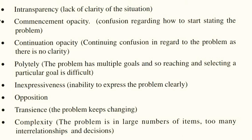Opposition: the problem itself creates an opposition-type situation, making it a characteristic of a difficult problem. Transience: the problem keeps changing and lasts for only a short time, creating trouble for the problem solver. Complexity: the problem involves a large number of items, too many interrelationships and decisions — the content is interconnected with too many interrelationships, leading to decision-making difficulties that prevent finding a solution.